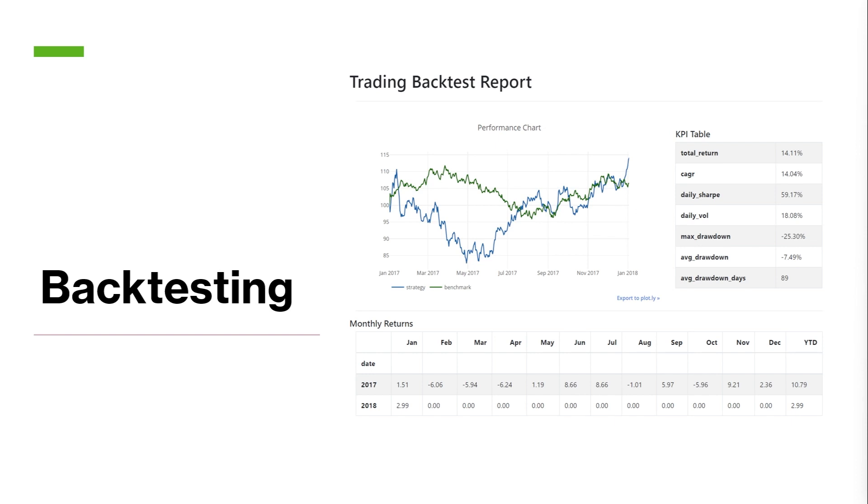The next step is to subject the strategy to rigorous backtesting. Backtesting can be divided into three key steps. One, we have pull historical data. We want to gather all the relevant historical market data, including price and volume information, or any other data points that would be relevant to your particular strategy. Two is running historical entries and exits. You want to implement the quantified strategy rules on historical data to generate a series of simulated trades over that particular time period, so let's say five years.